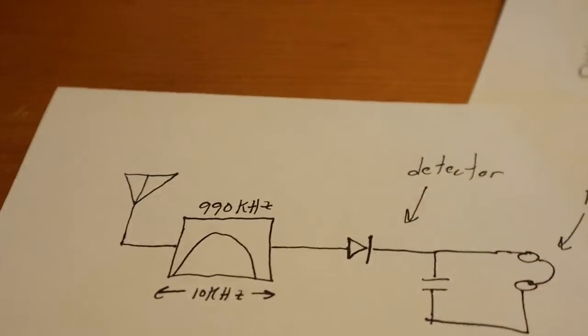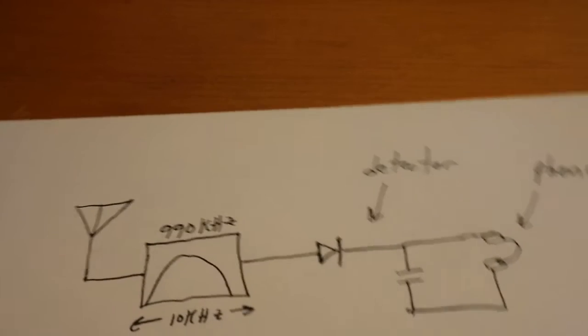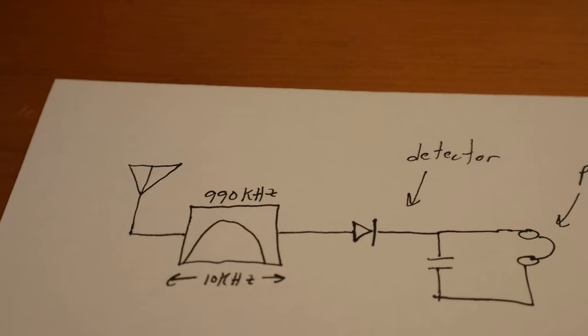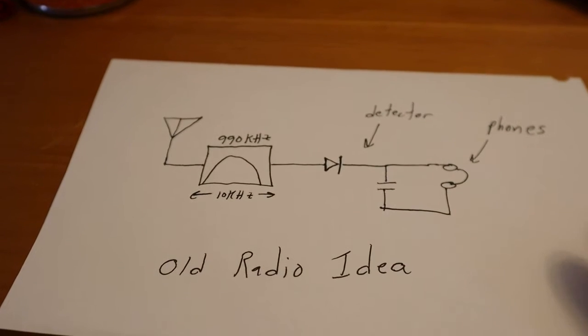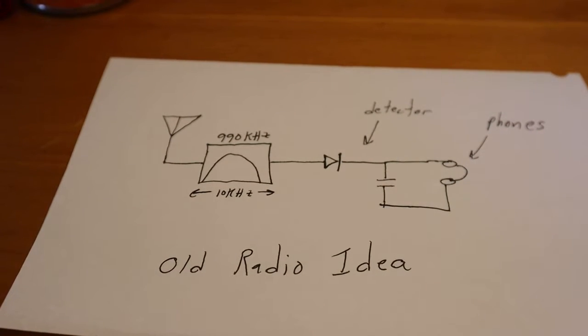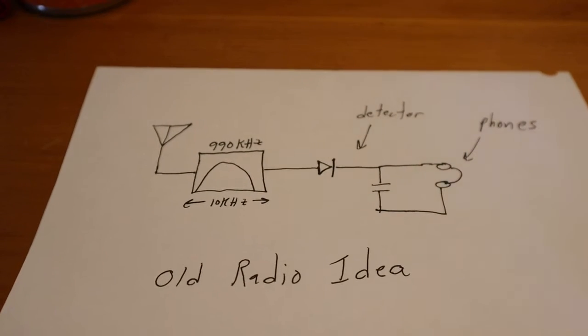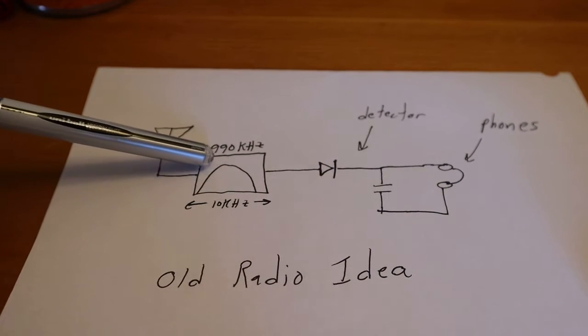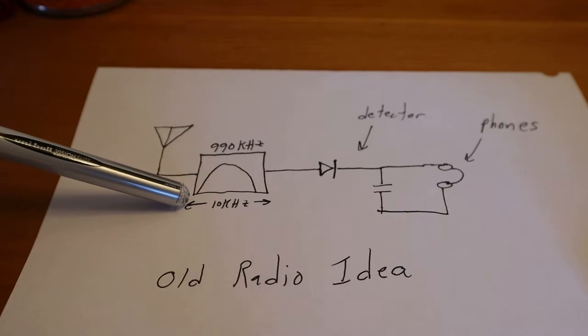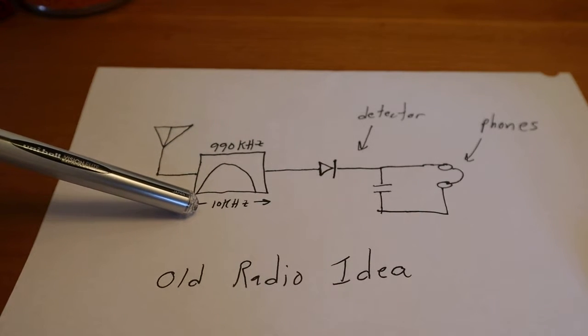And in the old days, that is exactly what they tried to do. It wasn't very successful, but that was the old idea here. One of the things that we did here is they had basically an antenna came in, they tried to make a band pass filter around 990 kHz, ideally with a 10 kHz span.